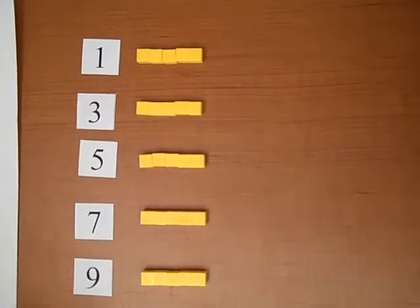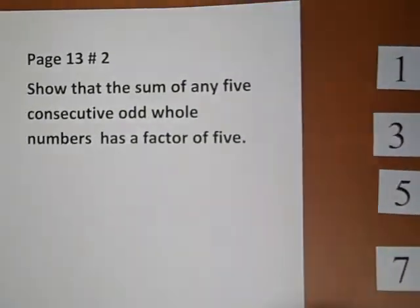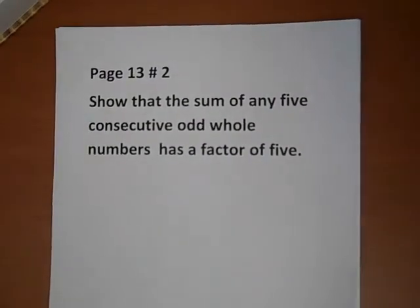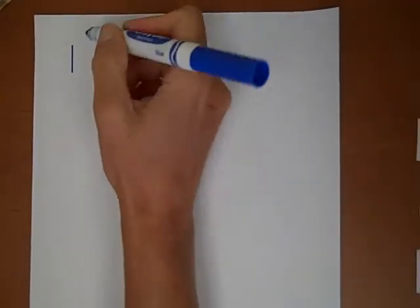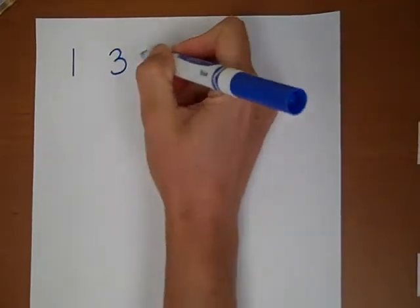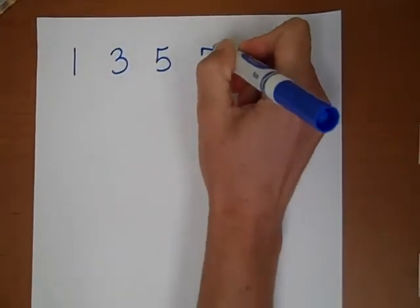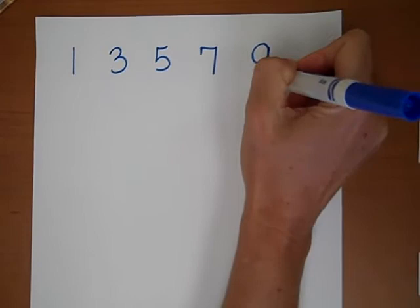Now that we've seen it with the manipulatives, we're going to see how it works using algebra. What we're going to do is we're going to take those same 5 numbers: 1, 3, 5, 7, and 9.